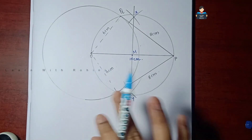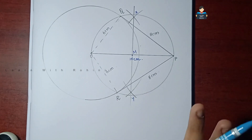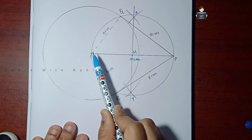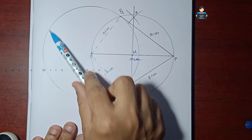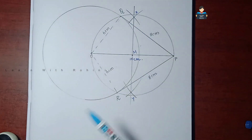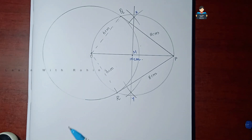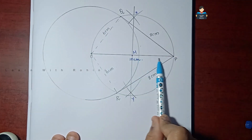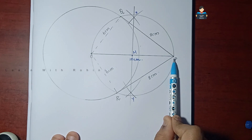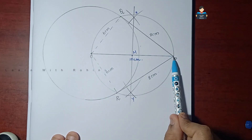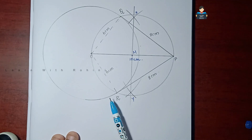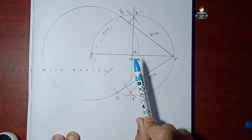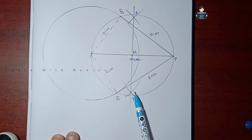So first, the radius is 6 cm and the distance OP is 10 cm. We measure PQ is 8 cm.